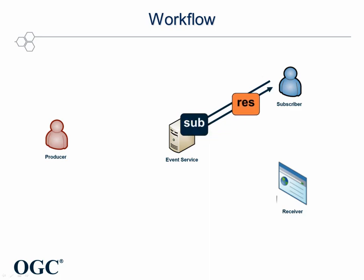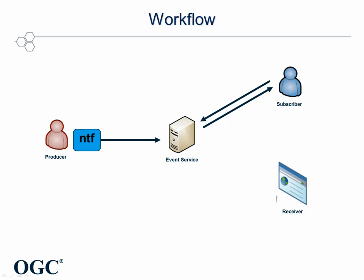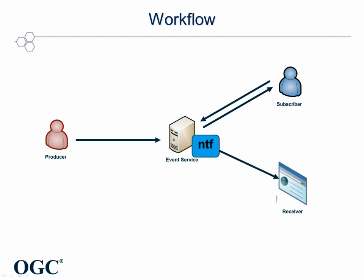This request contains a reference to a receiver and optional filter statements to express the interest in specific events. The service response contains an ID, which can be used to manage the subscription, for instance to cancel it. When the producer sends a notification to the event service, it is matched against the filters in the existing subscriptions. If a filter is satisfied, the notification is forwarded to the according receiver. The service operations used in this workflow are specified in the OASIS Web Services Notification Suite of Standards and the OGC Sensor Event Service Discussion Paper.